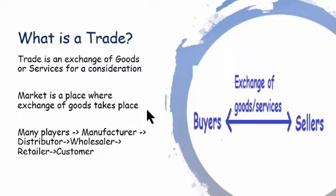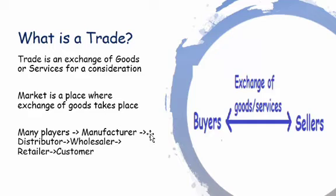A market is a place where the exchange of goods takes place. If you look at a different kind of product, the market participants may vary. There are many players in a trade. For example, a toothpaste manufactured somewhere goes to distributors specific to a particular region, then to a wholesaler, then to a retailer, and finally to the end customer. So there are various intermediaries involved between the actual manufacturer who produces a good and the end consumer. One person can also play the role of both producer and consumer, and there may be certain exceptions.